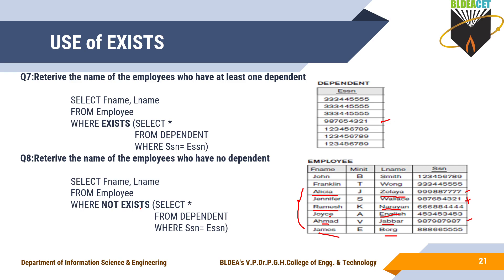To summarize: EXISTS returns true when at least one tuple exists in the inner query result. NOT EXISTS returns true when no tuples are selected from the inner query.